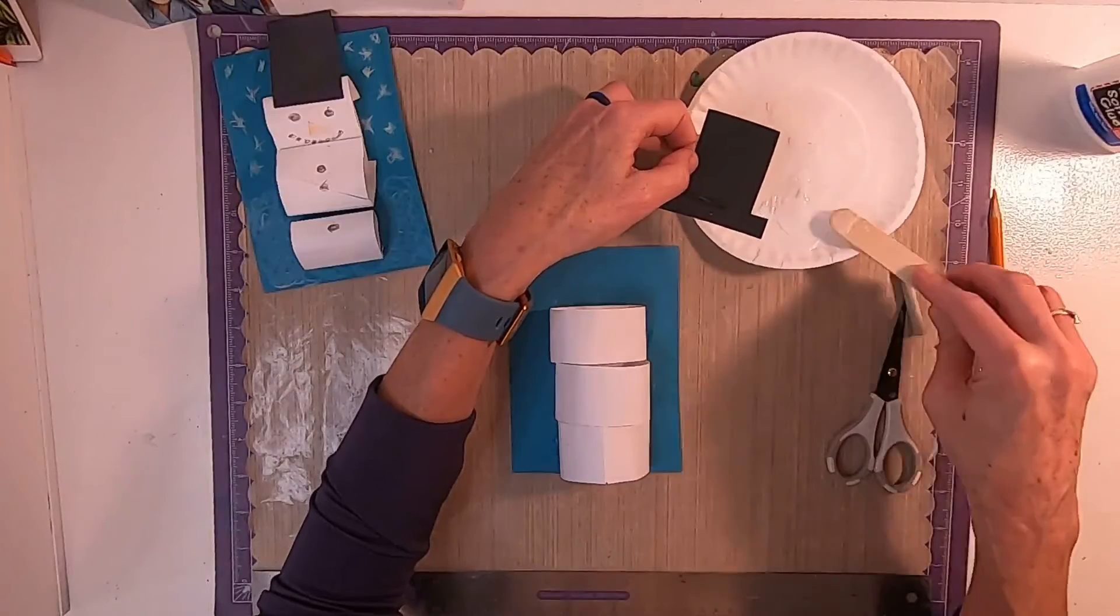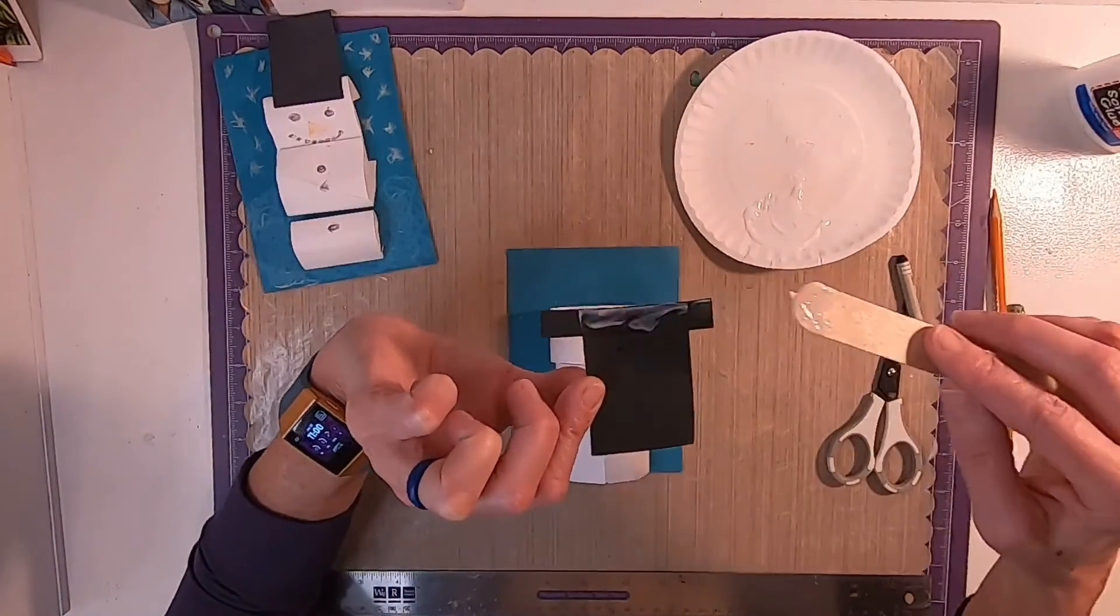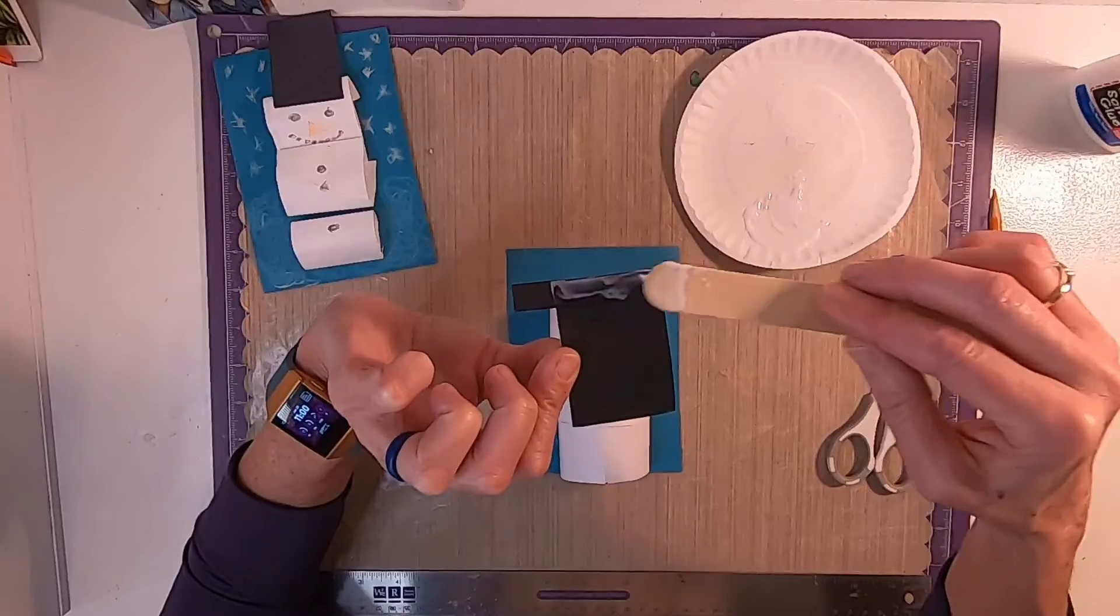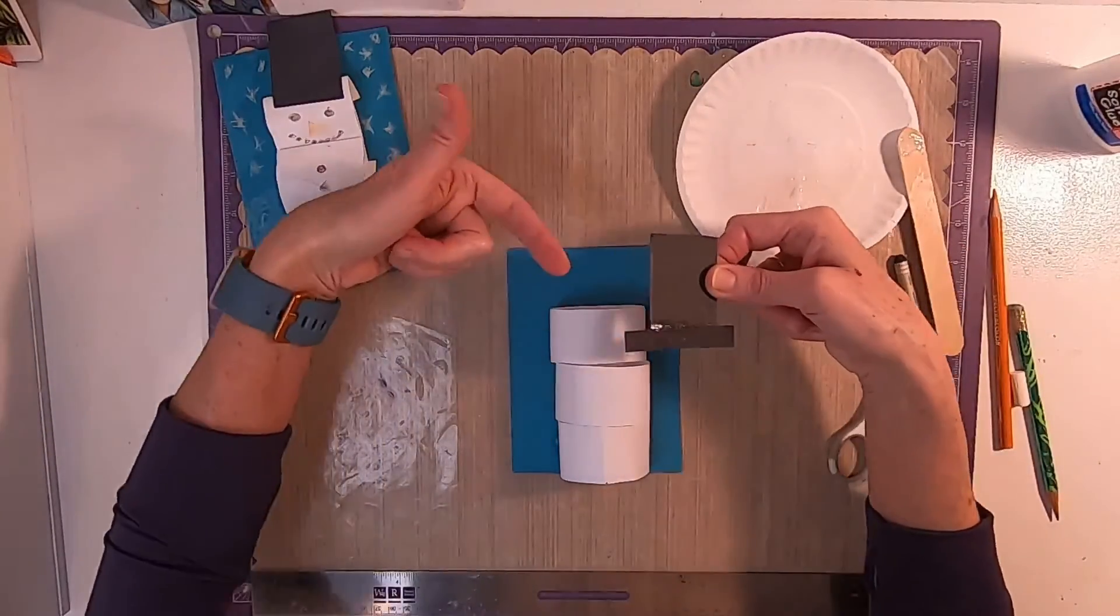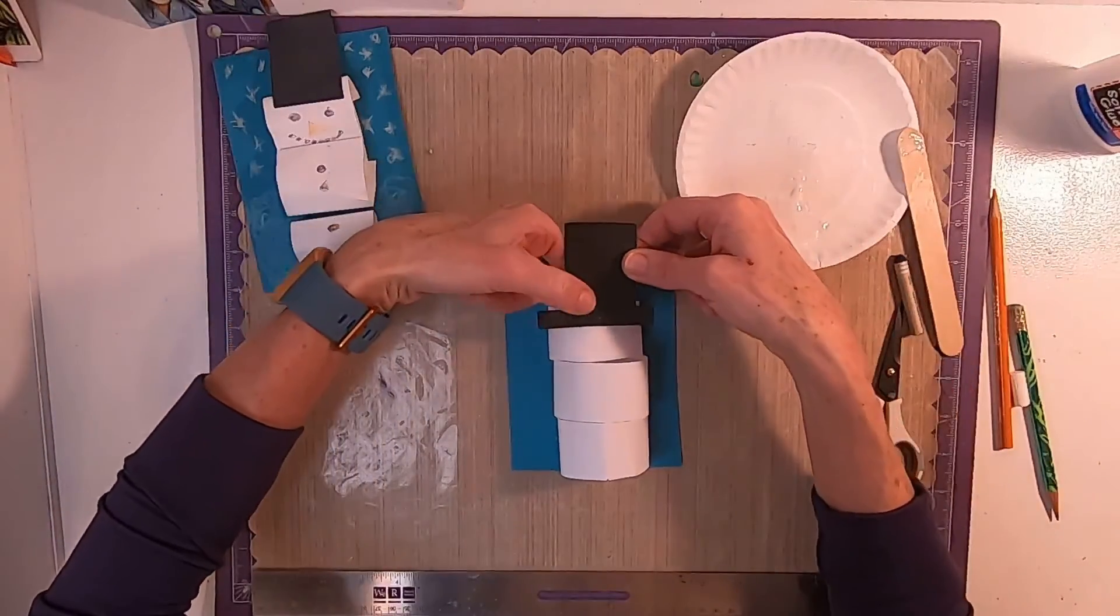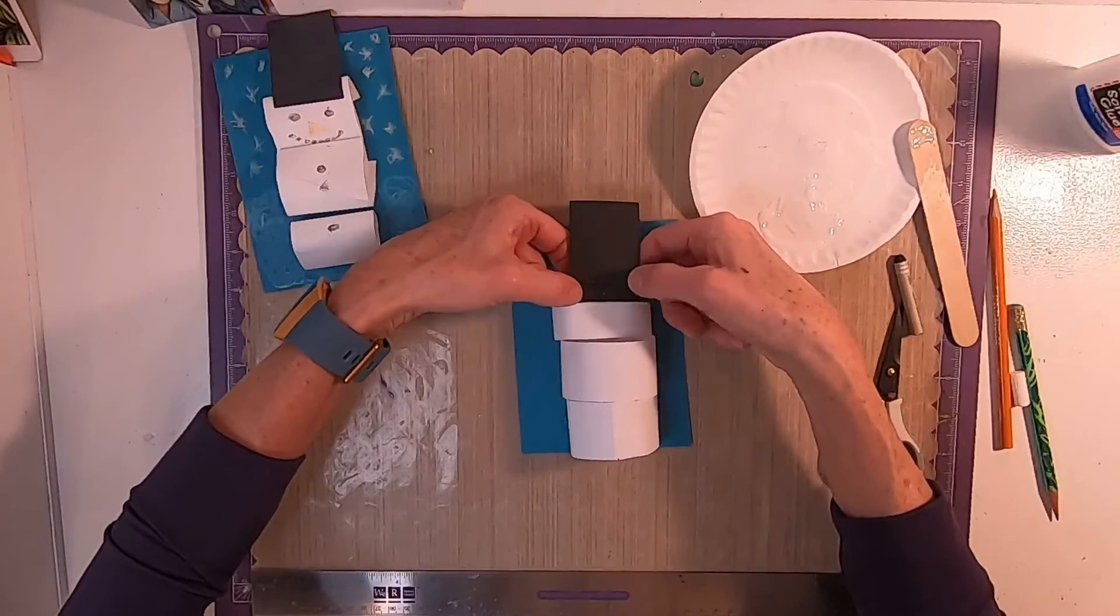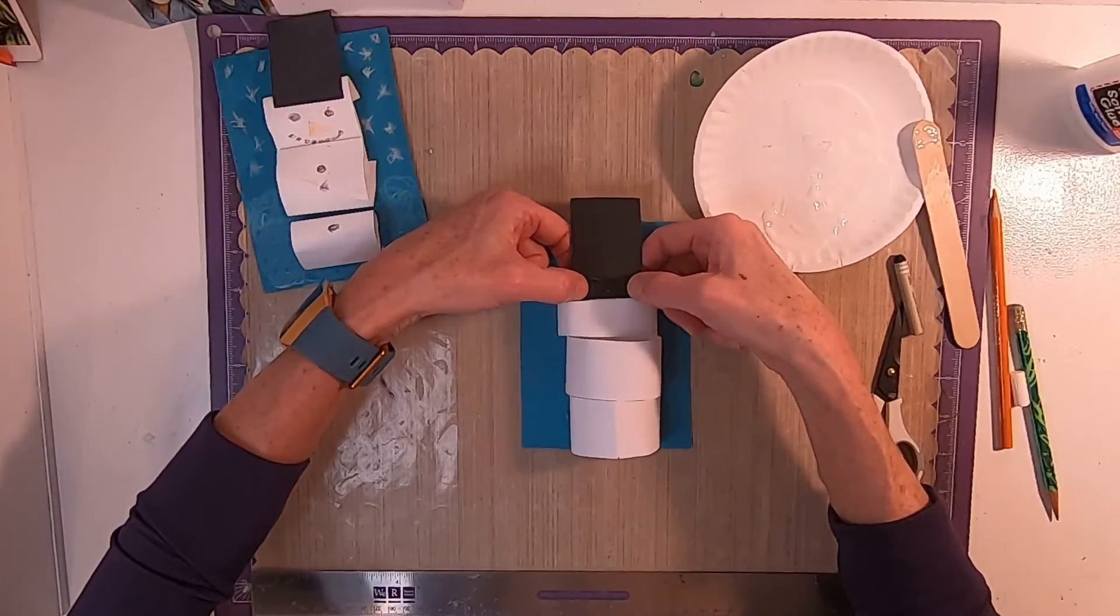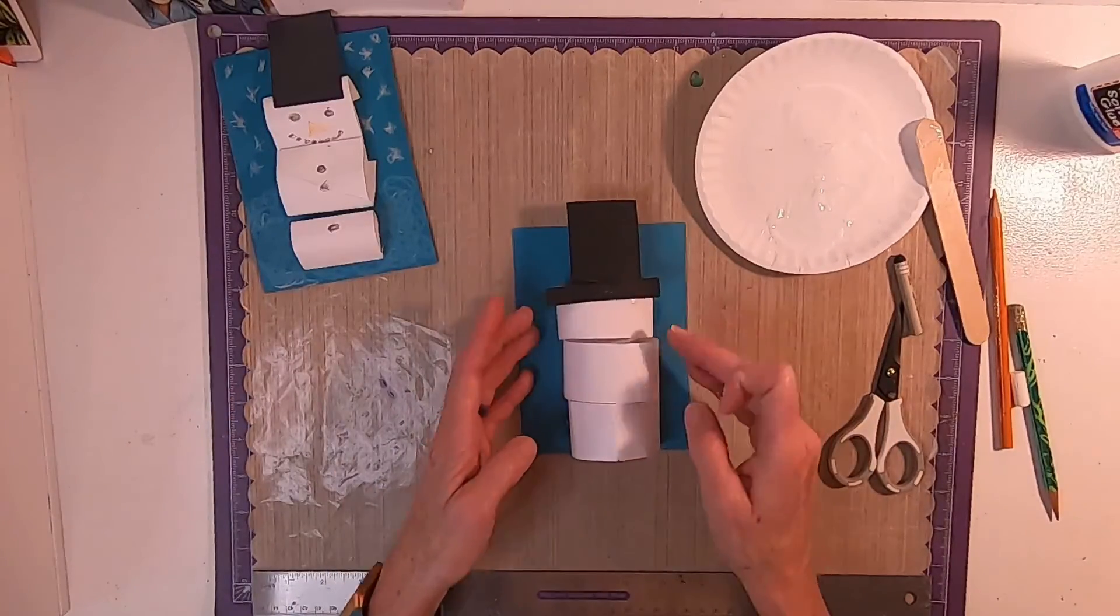Now, we want to add him right here. That way, we'll know where to put his eyes and his face. We put a little bit of glue on the back part. And then, we can put our finger inside and press to stick it down. Look at that snowman! He's coming together, isn't he?